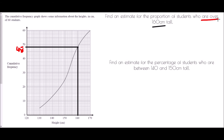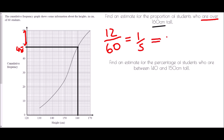This question asks for people who are over 160 centimetres, so we're interested in the people at the top of the graph. There are 12 further people. As a proportion, that is 12 out of 60, which is exactly the same as one fifth. If we convert that to a percentage, 20% of all the students are over 160 centimetres tall.